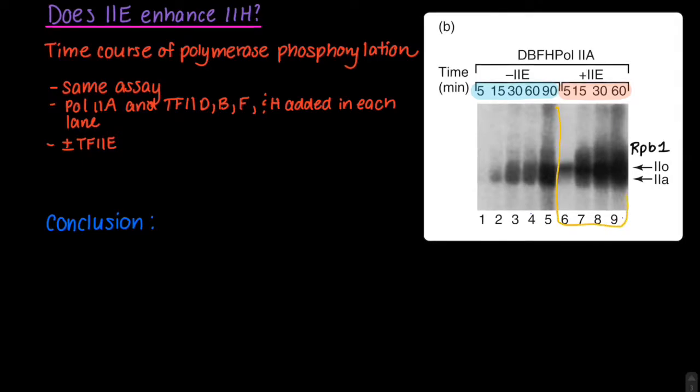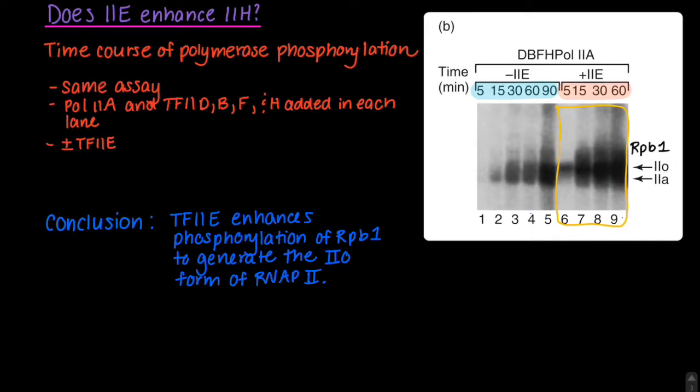From this data, it is clear that the lanes with TF2E, as highlighted by the orange box, have more rapid phosphorylation of RPB1. We can conclude from this data that TF2E enhances phosphorylation of RPB1 by TF2H.